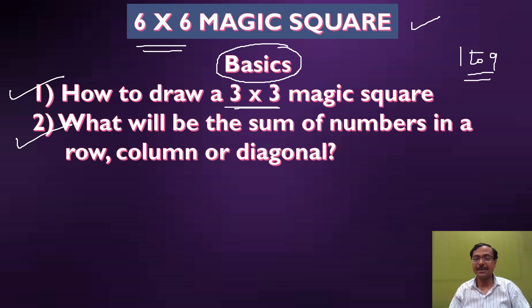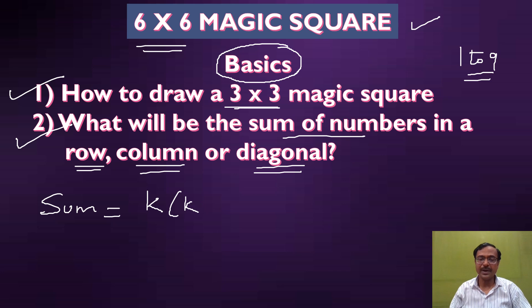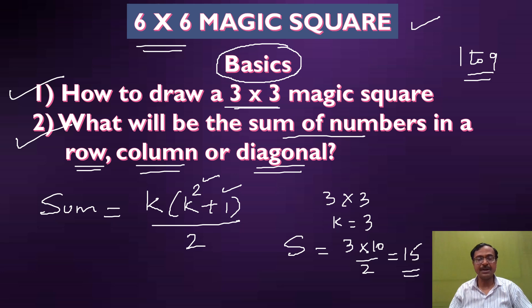A 3 by 3 magic square has numbers from 1 to 9 arranged in 3 rows and 3 columns that gives you a sum. What is that particular sum? That's the second concept you must know. The sum will always be equal to k times k square plus 1 upon 2. For a 3 by 3 magic square, k equals 3, so the sum is 3 times 9 plus 1, which is 10 upon 2, giving 15.